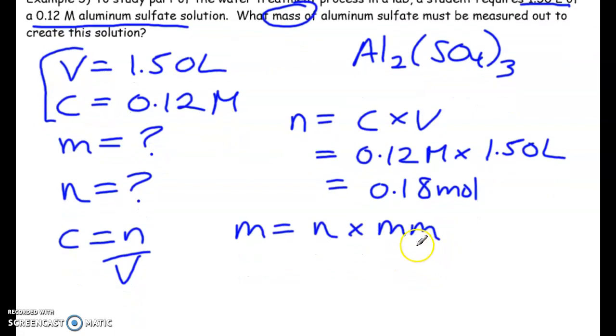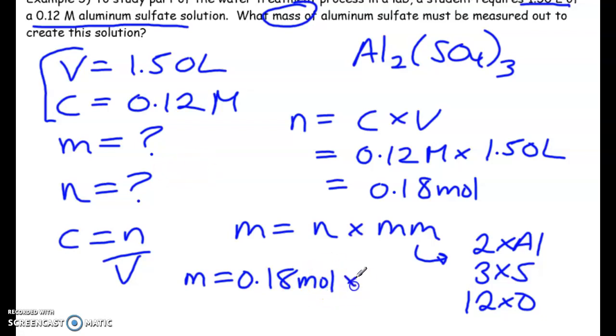So for the molar mass here, we have two aluminum, we have three sulfur, and we're going to have 12 oxygens. So the mass is 0.18 moles times, let's get the molar mass here, 26.98 times 2 plus 3 times 32.06 plus 12 times 16. So we get 342.14 grams per mole times 0.18.